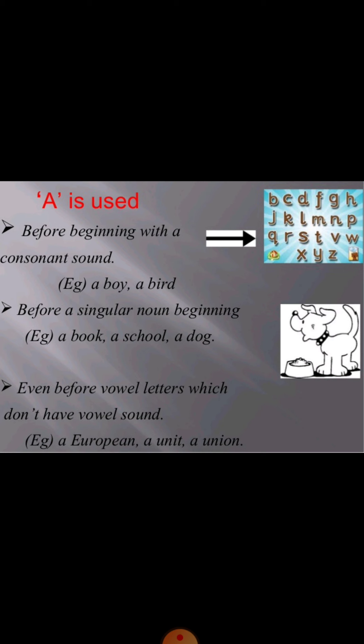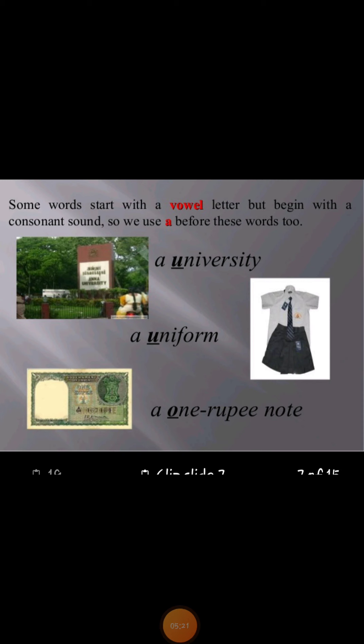A union. European — the letter e is a vowel, but the sound is not a vowel sound. We say 'European.' For unit, the sound of u here is a consonant sound. Some words start with a vowel letter but begin with a consonant sound, so we use a before that word.